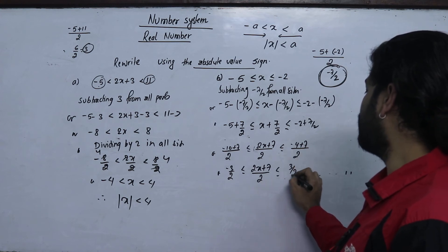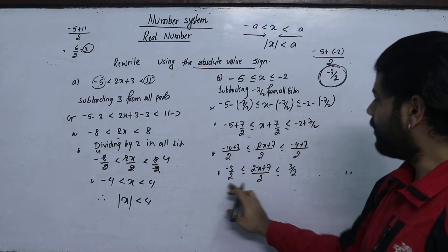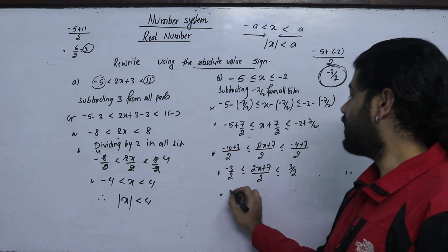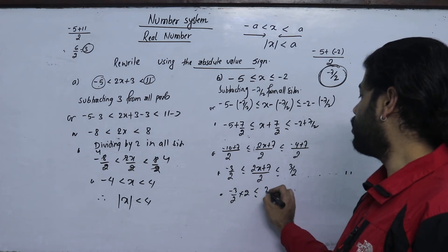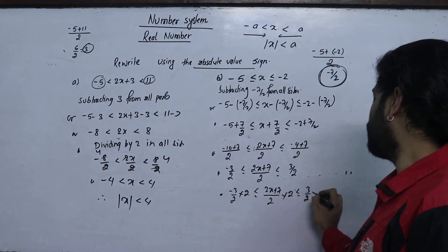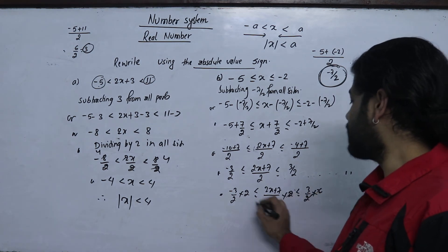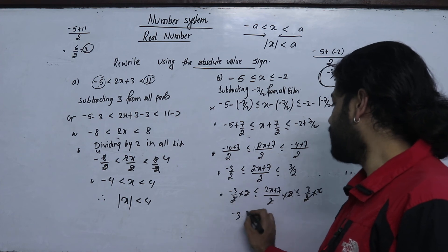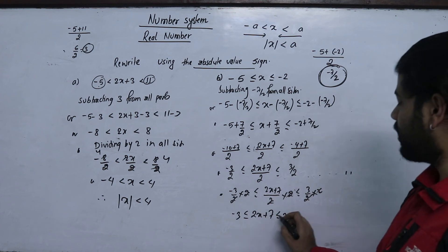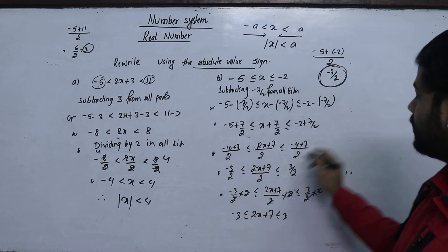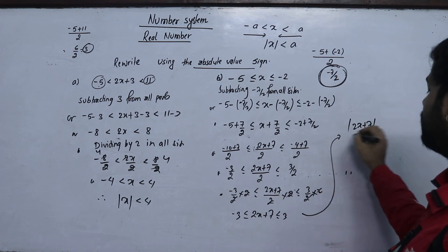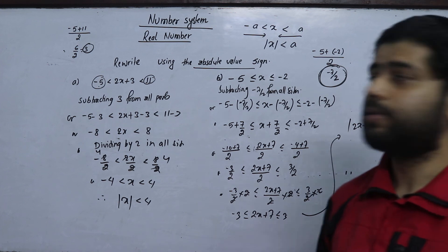So the same number minus 3 by 2 is equal to 0. I will divide by 2; divide by 2 is equal to 0. I will multiply by minus 3 by 2 into 2. 2x plus 7 divided by 2 into 2. Cancel it. Minus 3, 2x plus 7, 3 plus. The same number is negative and positive. 2x plus 7 is equal to 3. This is absolute value.